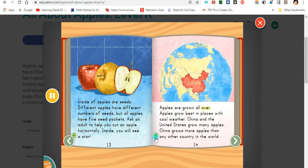Apples are grown all over. Apples grow best in places with cool weather. China and the United States grow many apples. China grows more apples than any other country in the world.